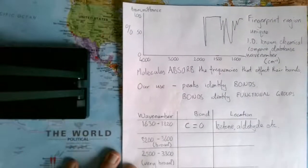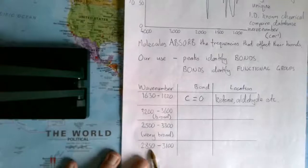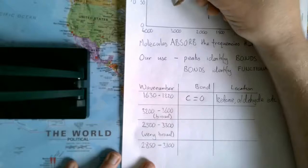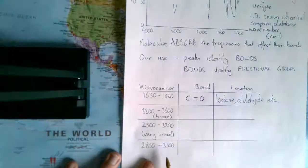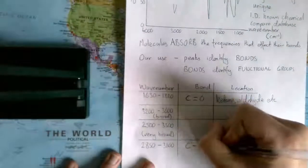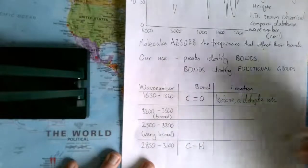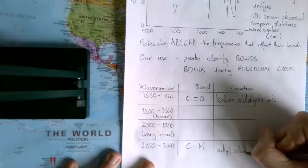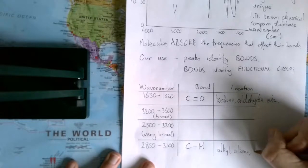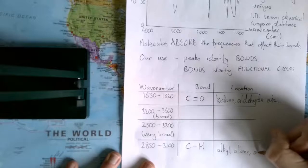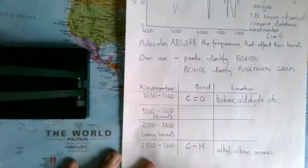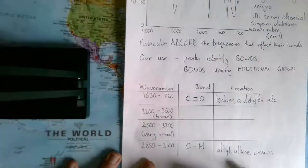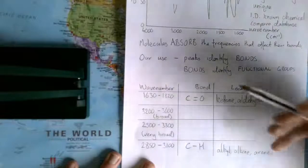Before I go any further, there is a peak at 2850 to 3100, somewhere around 3000, that every single molecule will have, which is the C-H. That's basically any alkyl, or any alkene, or any aromatic group. Basically, anywhere there's a carbon-hydrogen, you're going to get a peak there. That's one that's just going to be ignored when it comes to identifying our functional groups.